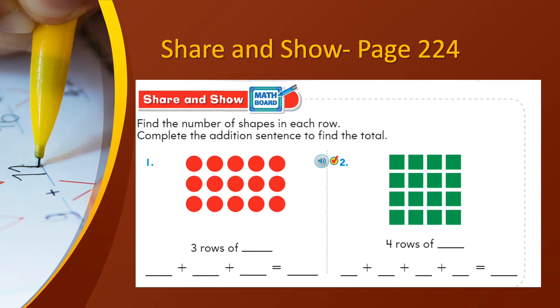So clearly as you can see in the first sum, you have 3 rows of, let's count these. How many are there children? Very good, there are 5. So 3 rows of 5, which means you will do skip counting by 5: 5, 10 and then the answer will be 15. 5 plus 5 plus 5 is 15. Wasn't that easy? Very good.